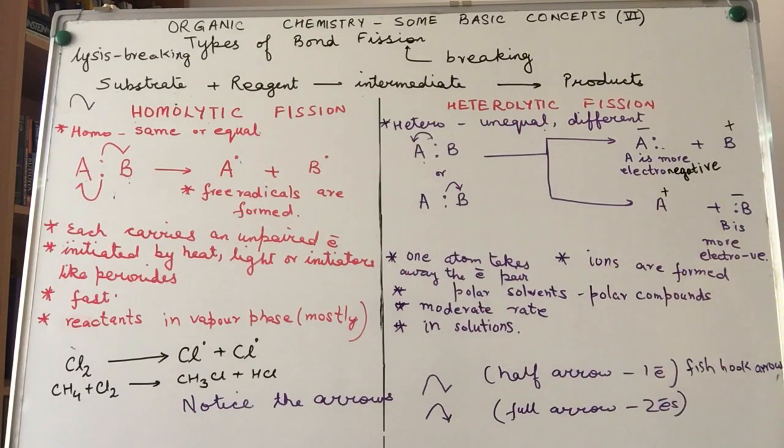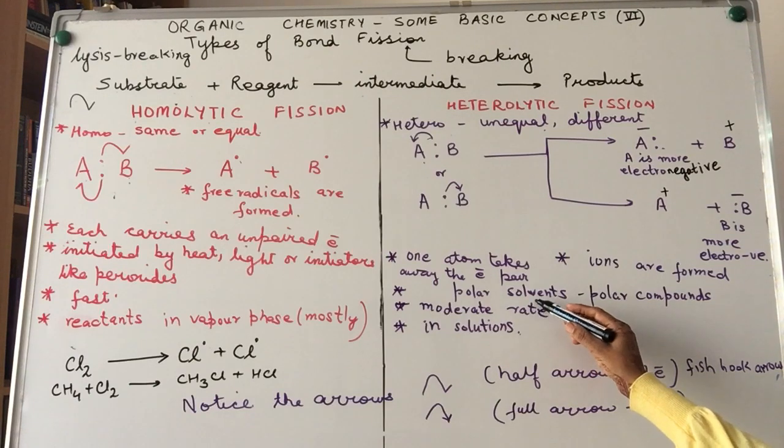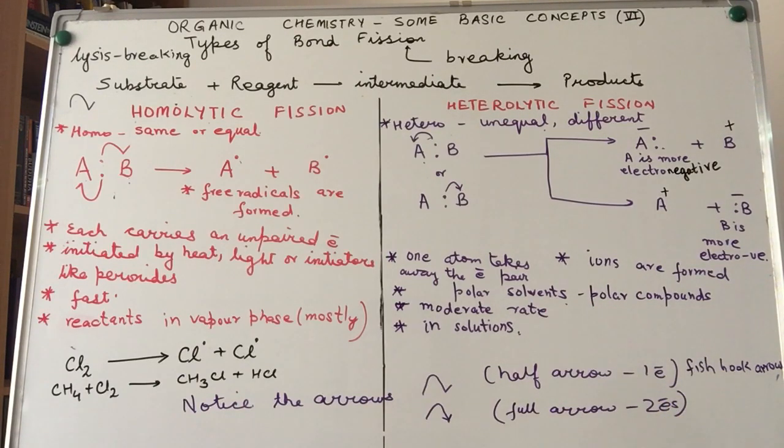Usually these type of reactions occur in polar solvents involving polar compounds like C2H5Cl undergoing reaction with NaOH. Obviously when you have polar solvents, we are talking about solutions. These type of reactions involving heterolytic cleavage or heteropolar reactions usually take place at a moderate rate compared to reactions involving homolytic fission.